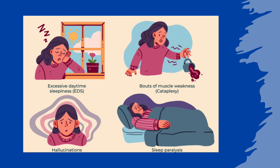Narcolepsy generally does not run in families, although the particular genetic marker mentioned can play a part — representing lower risk for those without the gene rather than higher risk for those with it. Research in 2013 found an association between the flu vaccine Pandemrix, used during the 2009–10 swine flu epidemic, and narcolepsy in children. While the risk was very small — estimated at around 1 in 52,000 — this led to Pandemrix no longer being used in the UK. Narcolepsy can also result from conditions that damage the brain areas producing hypocretin, such as a head injury, brain tumour, multiple sclerosis, or encephalitis; this is called secondary narcolepsy.